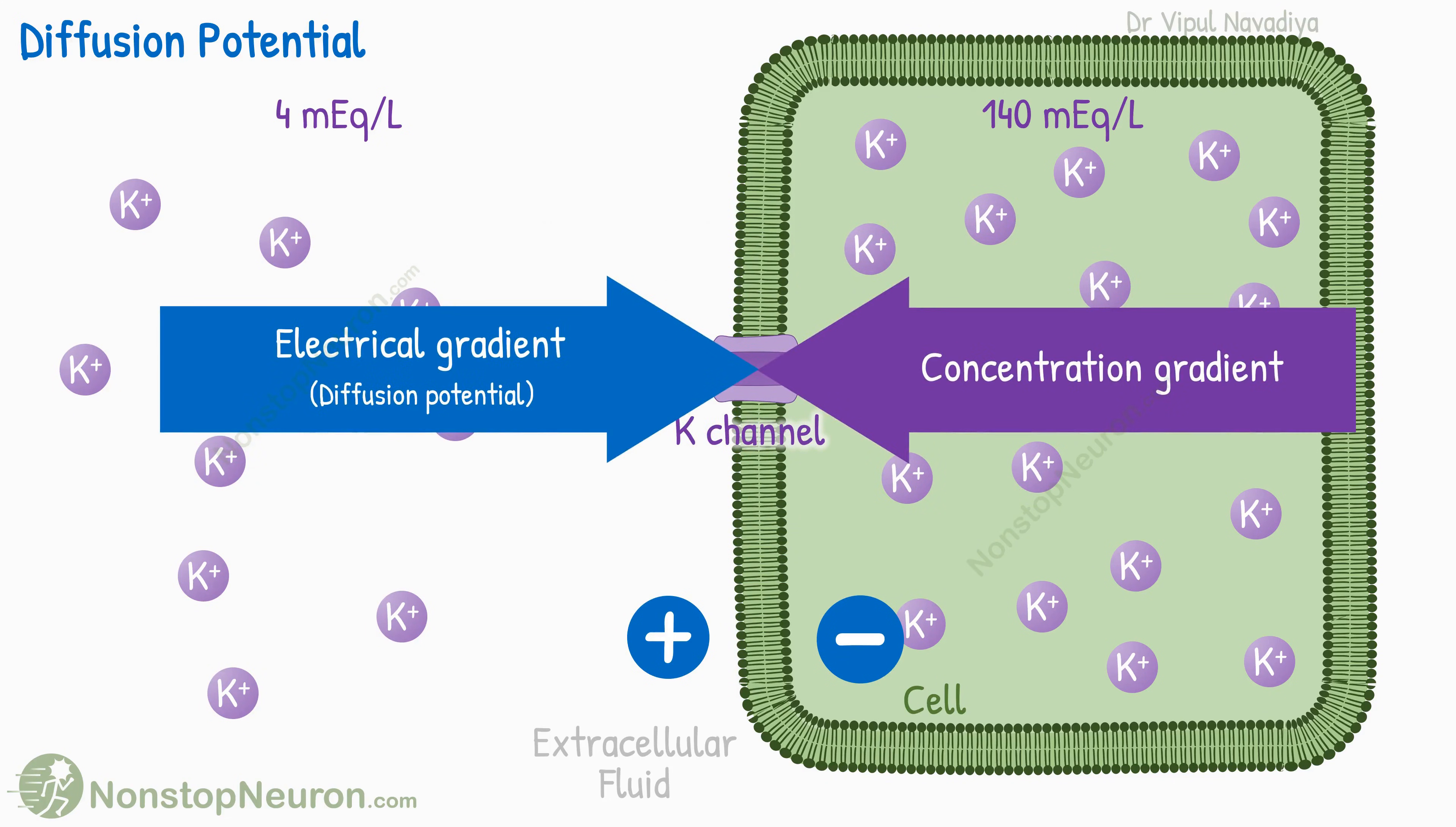In simple words, the diffusion potential balances the concentration gradient, so there is no net movement of potassium. For potassium, this happens at about 94 millivolts with negativity inside the cell. So, this is the equilibrium potential if the cell is permeable to potassium only.